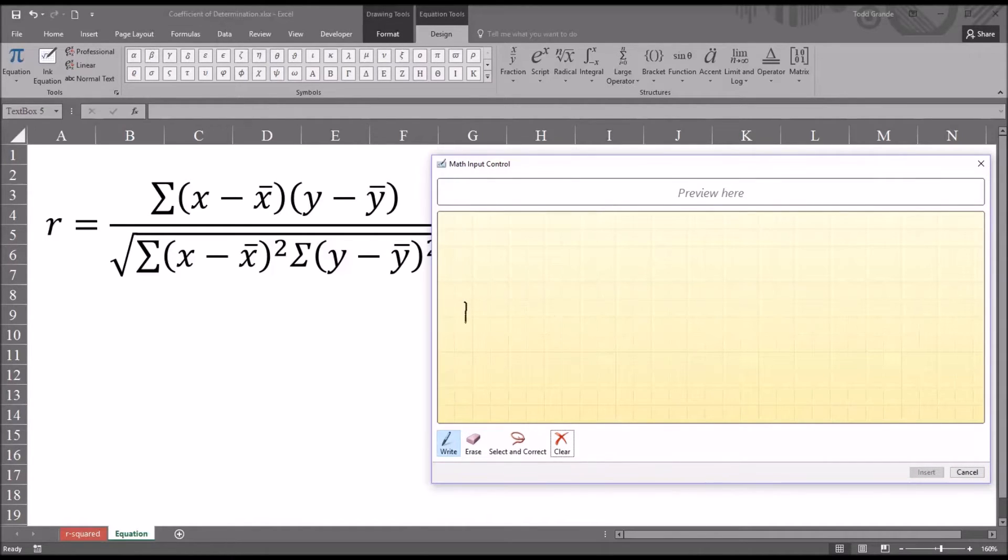So I'll get started putting the equation in. I'm going to start with R. And equal sign. And notice that the preview does not match what I intended. But I'm not going to worry about that. I'm going to continue on here. And I want sigma for the numerator. It's going to start the numerator. I'll try to keep these lines as accurate as I can.